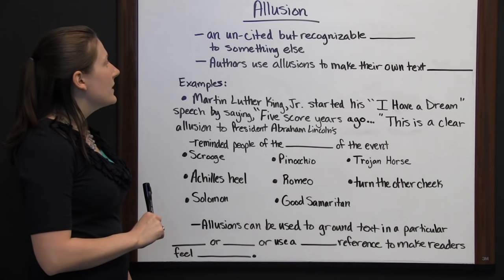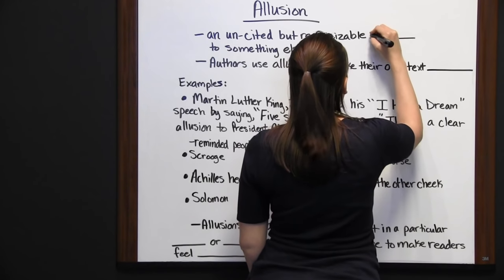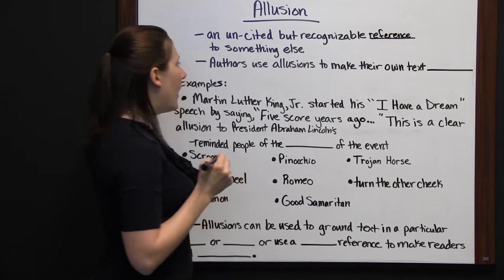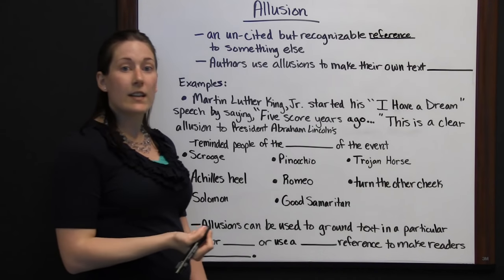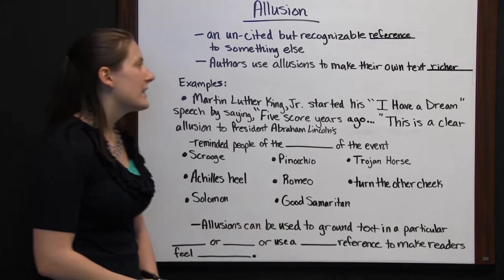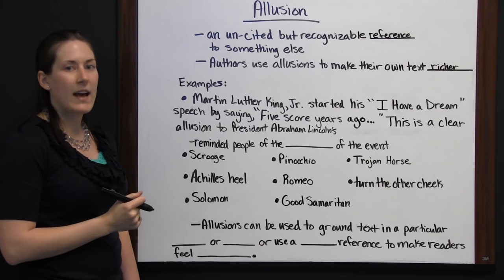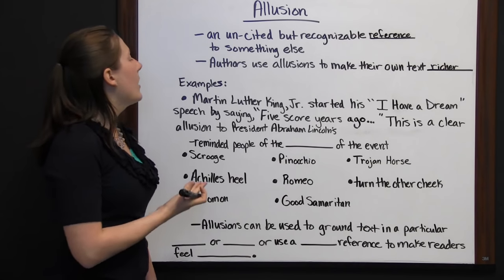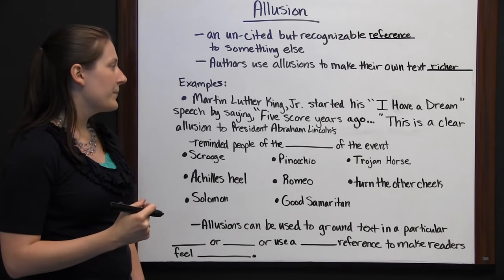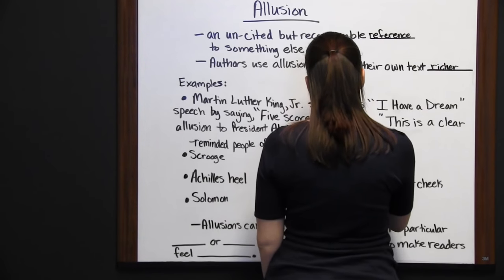Allusion is an uncited but recognizable reference to something else — usually a reference to something else in literature. Authors use allusions to make their own text richer. When an author uses an allusion, it gives their own writing the same significance or context that the allusion had. For example, Martin Luther King Jr. started his 'I Have a Dream' speech by saying 'five score years ago,' which is a clear allusion to President Abraham Lincoln's Gettysburg Address.